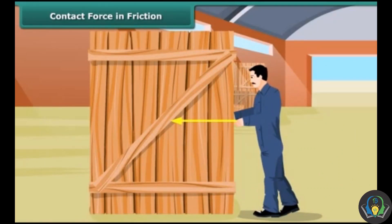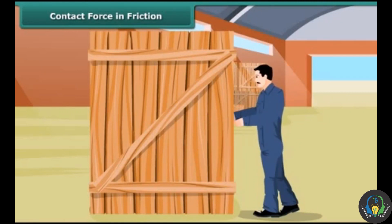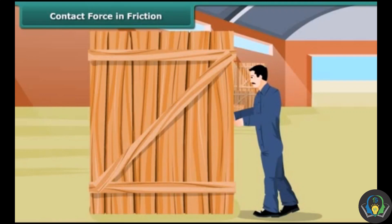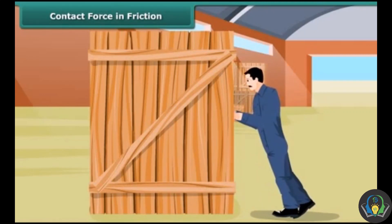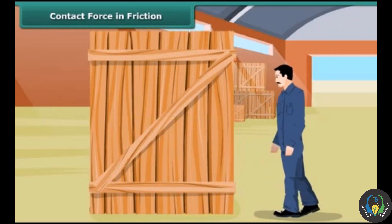Do you have any idea why this happens? When the box is pushed, the bottom of the box and the floor rub against one another and friction comes into play, which resists the motion. The force of friction is more than the push force being exerted by the man.